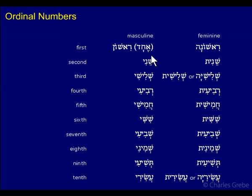Echad is what shows up in Genesis 1 verse 5 — 'day one.' And then the rest of the days are listed as 'second day,' 'third day,' and so on in Hebrew order. So echad is actually what's used in Genesis 1 verse 5 for number one.